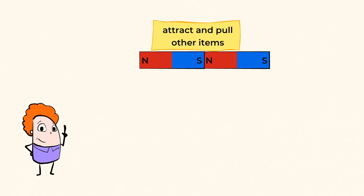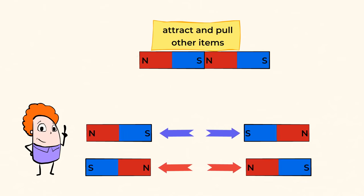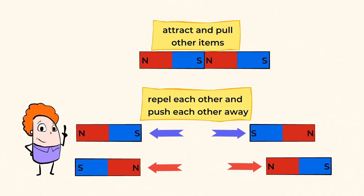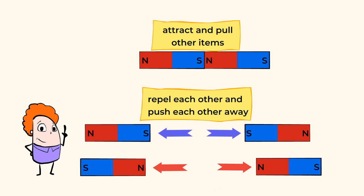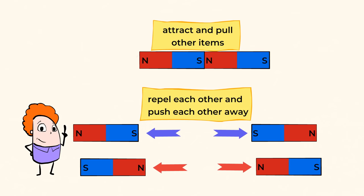North pole to south pole. But the opposite happens when two south poles or two north poles come close. They repel each other and push each other away. That's really important here. Different poles pull each other closer, and similar poles push each other away.